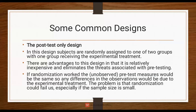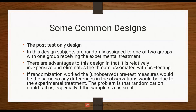Looking at common research designs: the post-test only design randomly assigns subjects to one of two groups, with one group receiving the experimental treatment. The advantages are that it is relatively inexpensive and eliminates the threats associated with pre-testing. If randomization worked, the pre-test measures would be the same, so any differences in observations would be due to the experimental treatment. The problem is that randomization could fail, especially if the sample size is small.